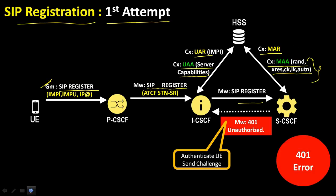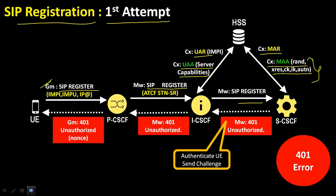Something unusual happens at this point: the S-CSCF challenges the UE. Upon receiving the IMS AKA authentication vectors, the S-CSCF stores the XRES and replies to the SIP REGISTER with error code 401 Unauthorized, indicating that AKA V1 MD5 is the security mechanism to be used. The I-CSCF forwards the 401 Unauthorized response to the P-CSCF, which is further forwarded to the UE through the access network. This first SIP registration request has failed.